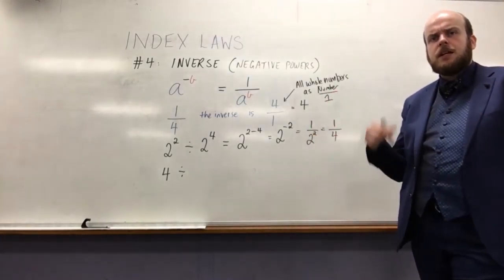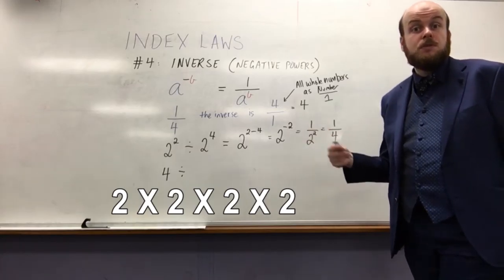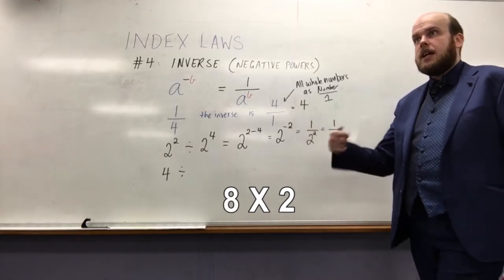What's 2 to the power of 4? That would be the same as saying 2 times 2 times 2 times 2. So, 2 times 2 is 4. 4 times 2 is 8. 8 times 2 is 16.